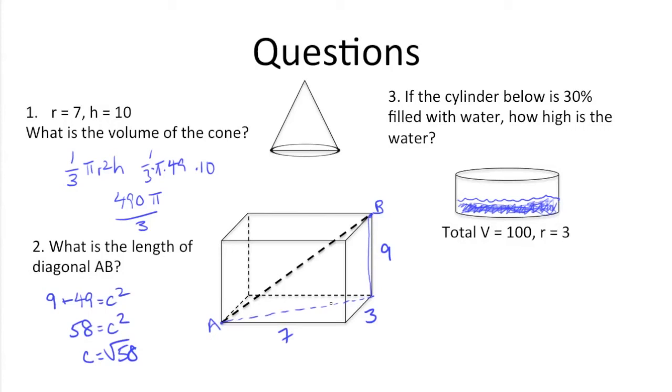So now we know that this leg is root 58. We know this leg is 9, so again, using the Pythagorean theorem, a squared, so this leg is the square root of 58, squared.